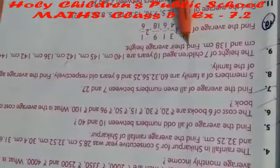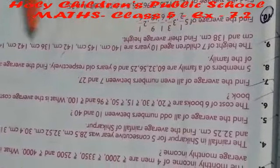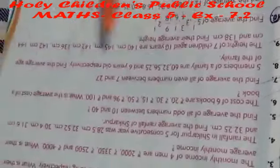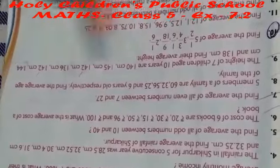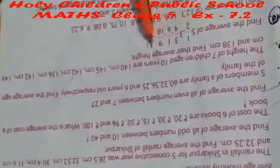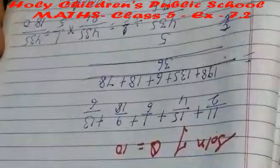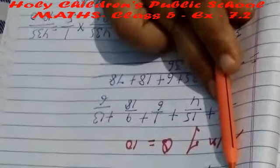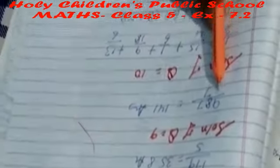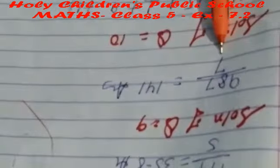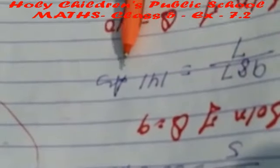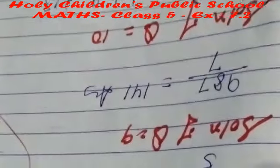Question number 9: the heights of 7 children are given — at 10 years, values such as 140, 145, and others are given. Find the average height. The sum of the numbers is 987 and the total count is 7. 987 divided by 7 is equal to 141. The average is 141.